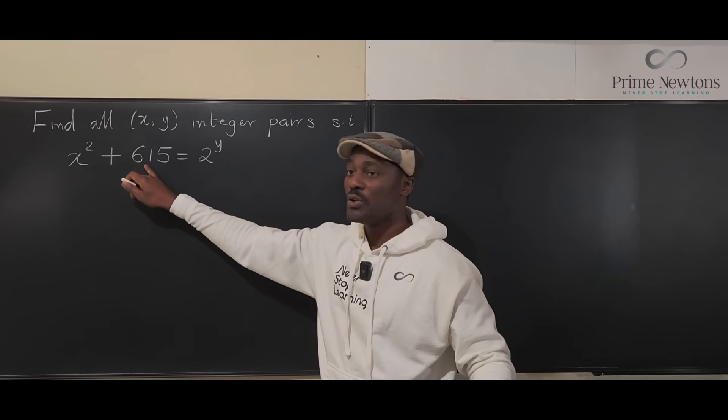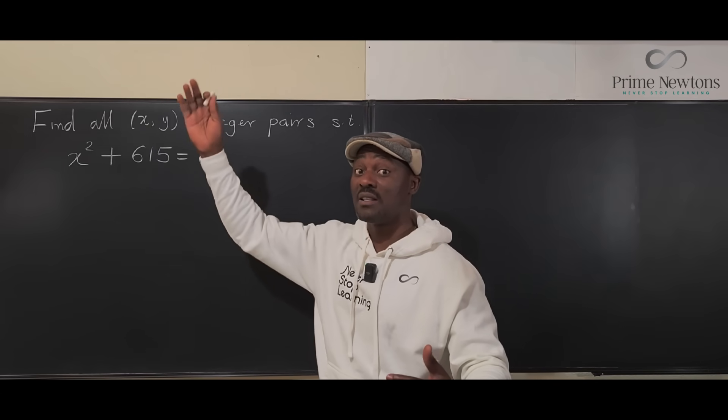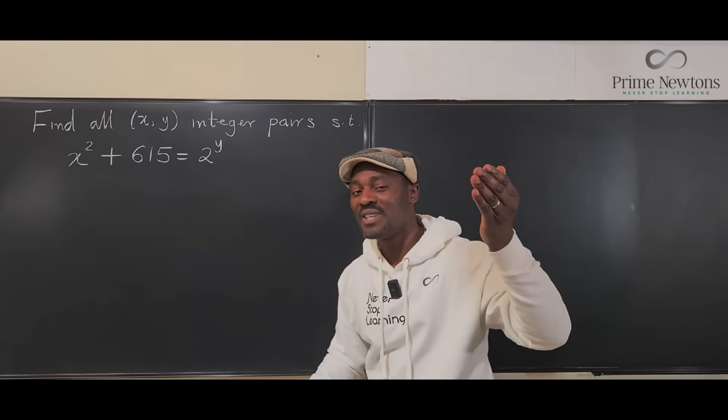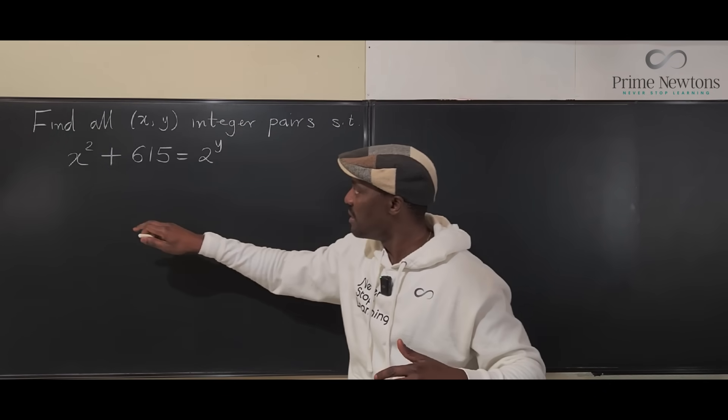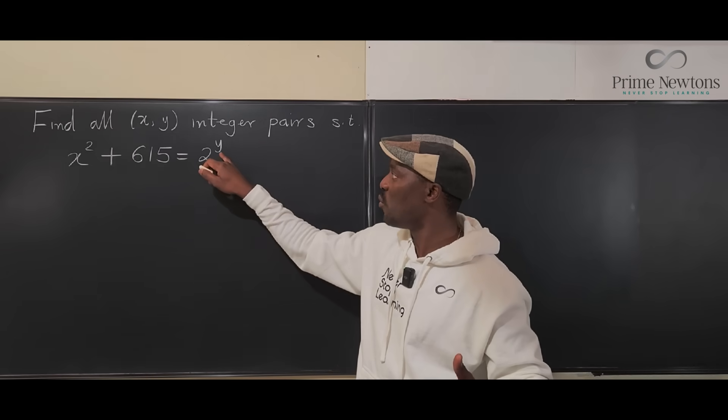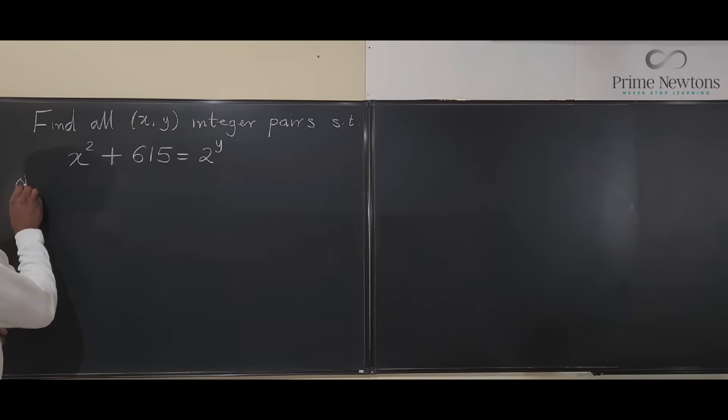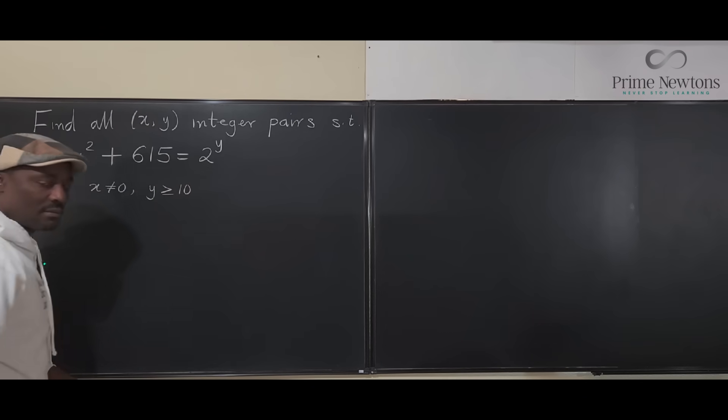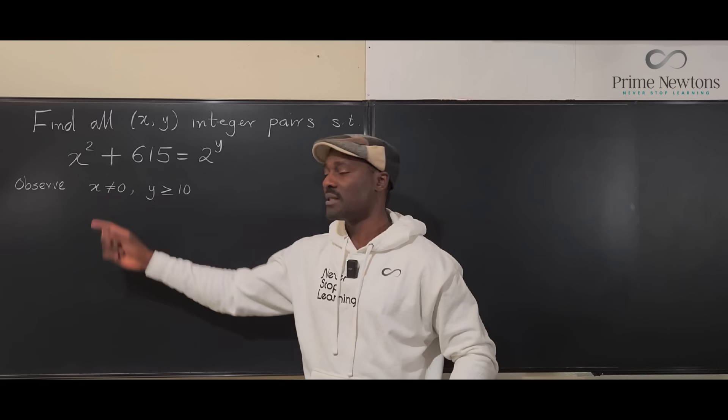The closest power of 2 to 615 is 2 to the 9th, which is 512. And after that is 2 to the 10th, which is 1024. So 615 is between 512 and 1024. But we know this has to be greater than 615 because this guy is not zero. So the minimum that this power could be is 1024, which means y has to be 10 or more. So we observe x is not equal to zero and y is greater than or equal to 10.